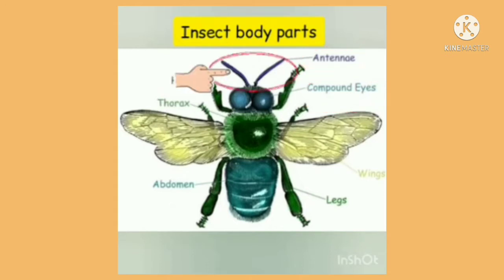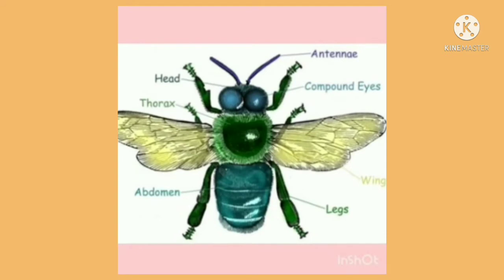The function of an insect's antenna is to smell and feel, because they do not have a nose and hands just like humans do. The 2 compound eyes can see extremely quick movements and things that are close to them.